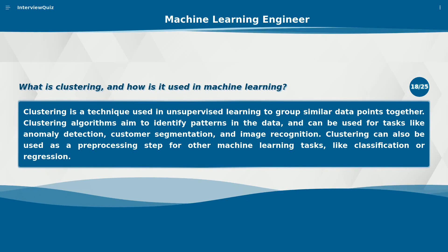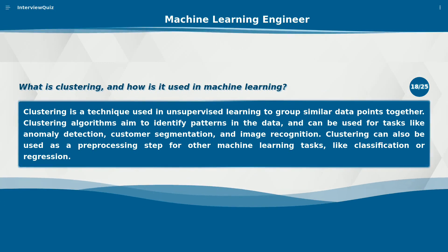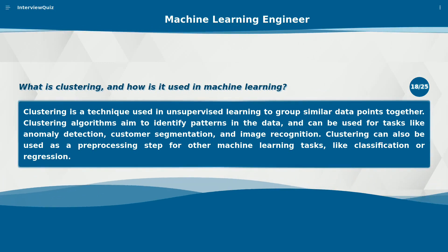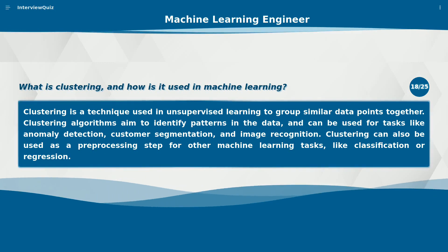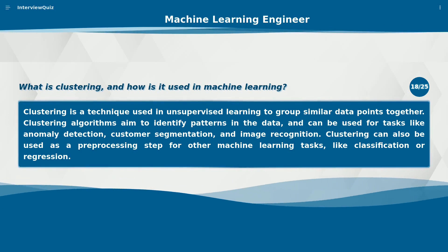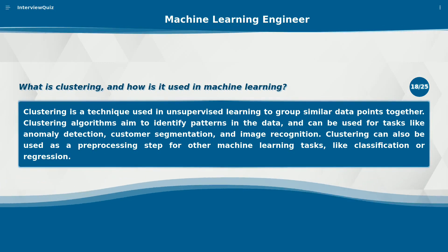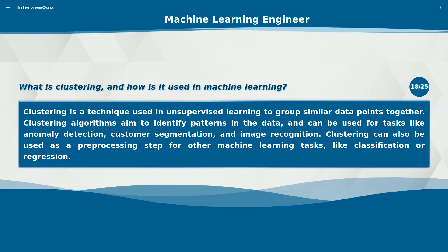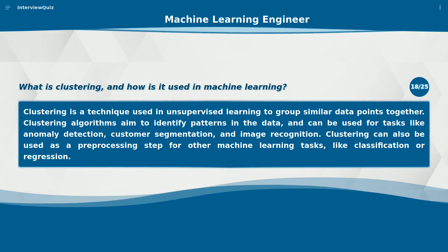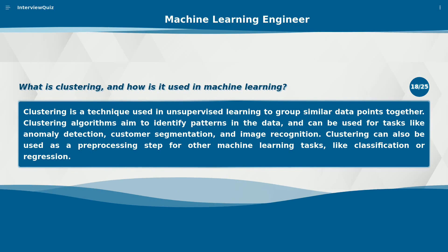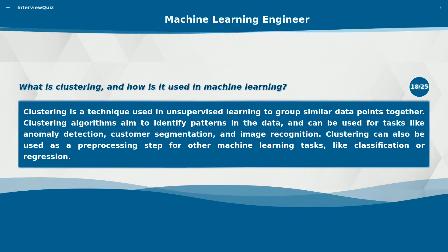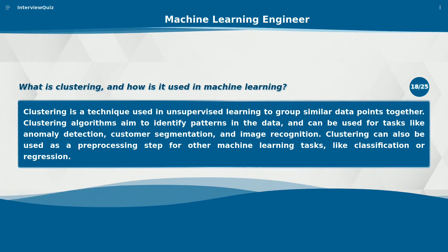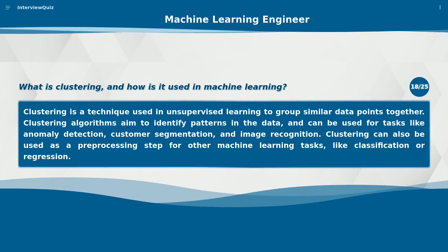What is clustering, and how is it used in machine learning? Clustering is a technique used in unsupervised learning to group similar data points together. Clustering algorithms aim to identify patterns in the data, and can be used for tasks like anomaly detection, customer segmentation, and image recognition. Clustering can also be used as a preprocessing step for other machine learning tasks, like classification or regression.